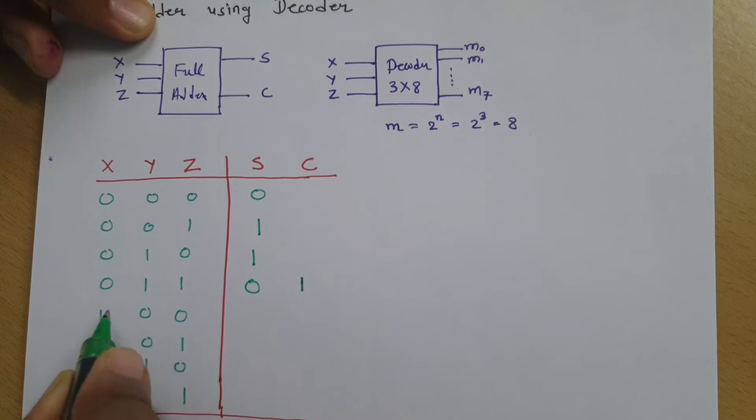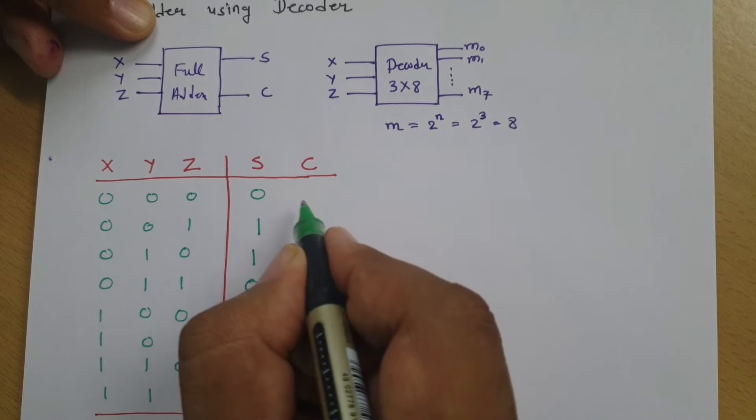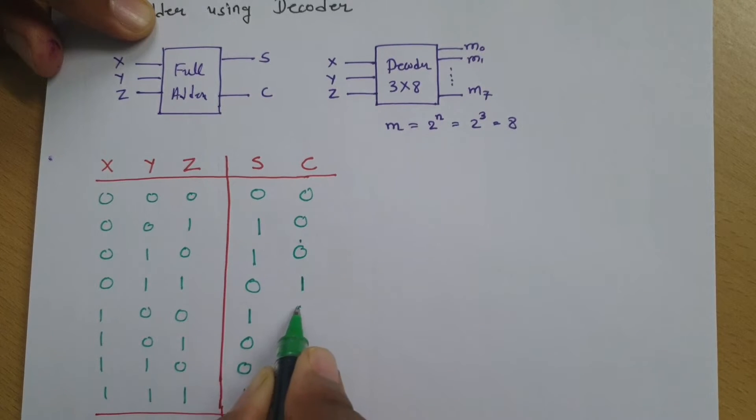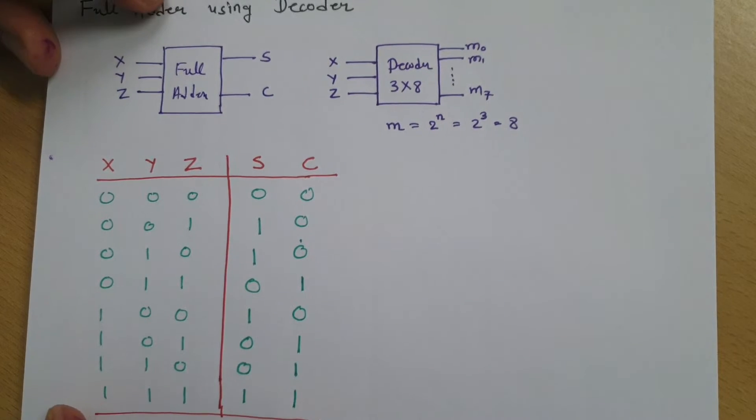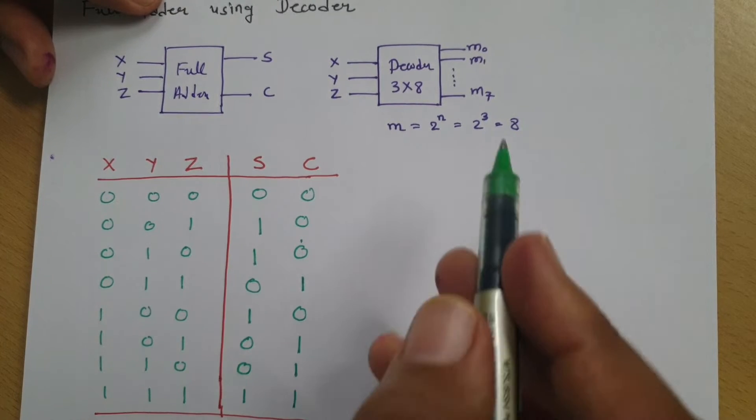For 1,0,0, sum is 1 and carry is 0. For 1,0,1, sum is 0 and carry is 1. For 1,1,0, sum is 0 and carry is 1. And for 1,1,1, sum is 1 and carry is 1. For other locations, carry is 0. This is how sum and carry is there and that is what I want to implement using decoder.